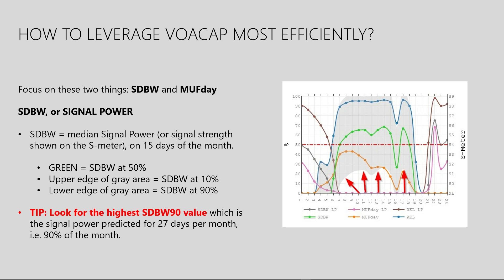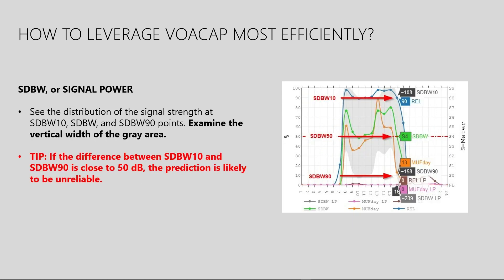The scale is on the right side of the image. The upper edge of the gray area indicates the signal strength for 10%, or 3 days, in a month. Similarly, the lower edge is the predicted signal strength for 90%, or 27 days, in a month. To find the best operating time in terms of propagation, look for the highest value for the lower edge. However, we also need to see what the difference between the lower and upper edge values is. Differences close to 50 decibels indicate that the prediction is likely to be quite unreliable, and VOACAP does not really know what's going on. The smaller the difference, the better.